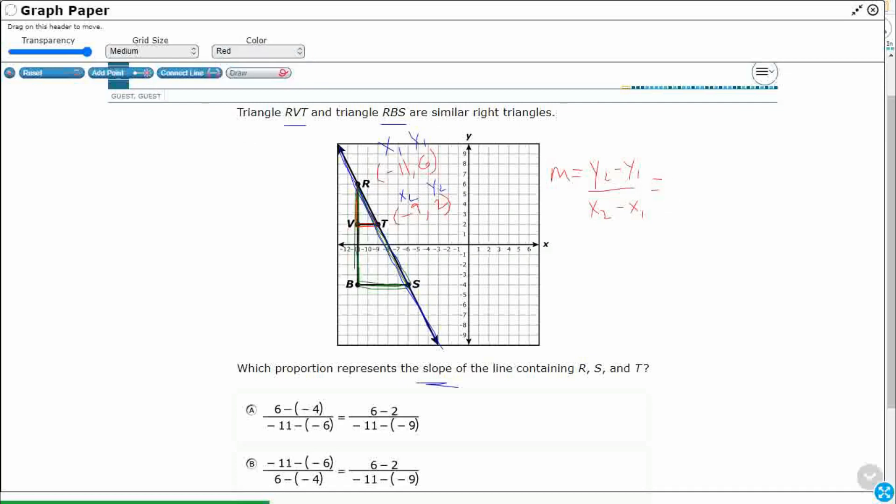All right, so now we just plug it in. And we don't even need to solve it. We just need to plug it in, right? So we could do X2 is going to be, let's see here. Let's start with my Y2. Let's see, my Y2 is going to be 2 minus my Y1 is 6 over. And then I've got negative 9 minus and then that negative 11. OK, so that could equal the slope of that.